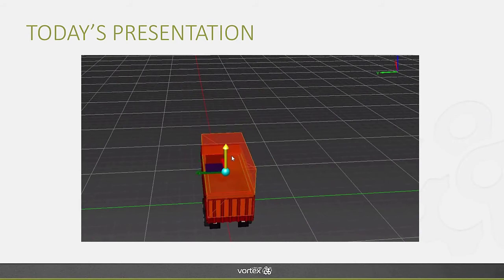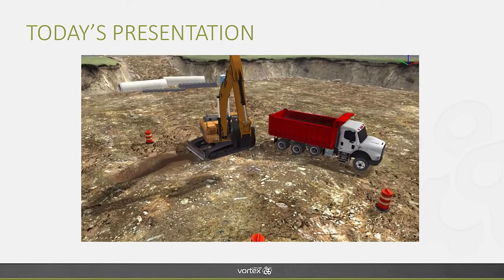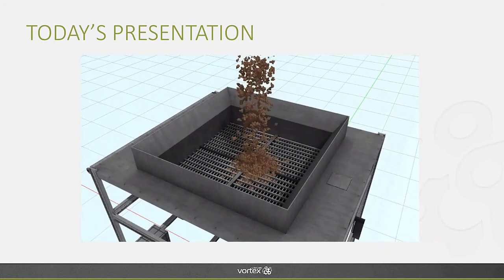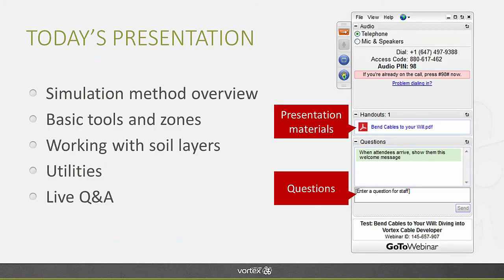Today's presentation will cover the different capabilities of Vortex Earthworks Systems, from equipment creation to formable terrain addition in scenes, and also solver utilities which provide the capabilities to transform collision geometries into actual hoppers. We'll go over these in a few sections: the theory behind Vortex Earthworks systems, basic tools and Earth Moving Zones, new features added with Vortex 6.6 — namely soil layers and Earthworks utilities — and we'll finish with a live Q&A. You can submit questions via the questions box on the right-hand side of the GoToWebinar interface, and download presentation materials and the Earthworks data sheet under the handout box.